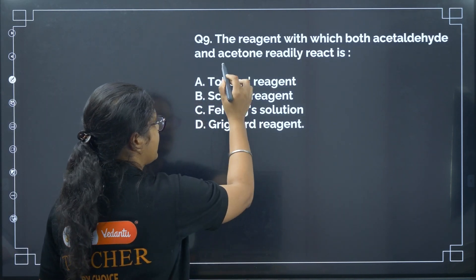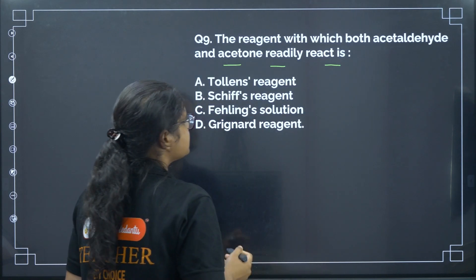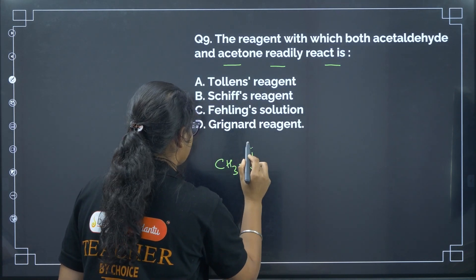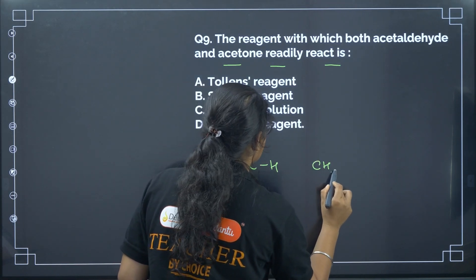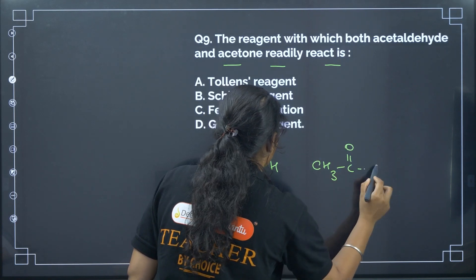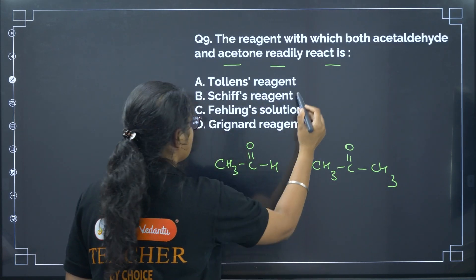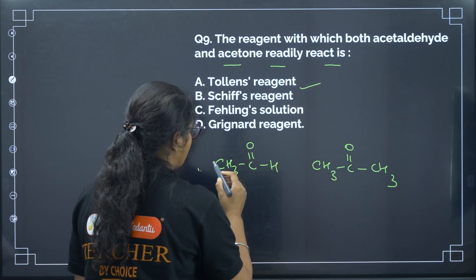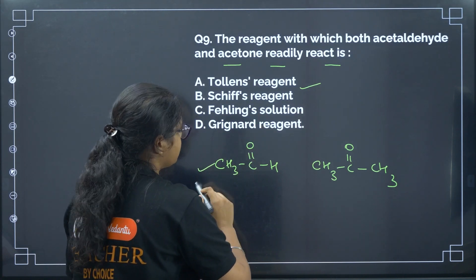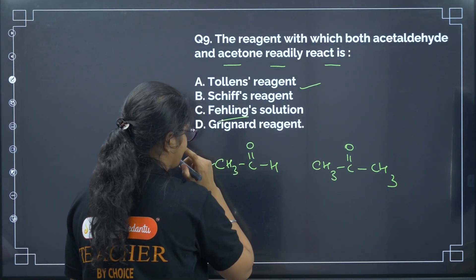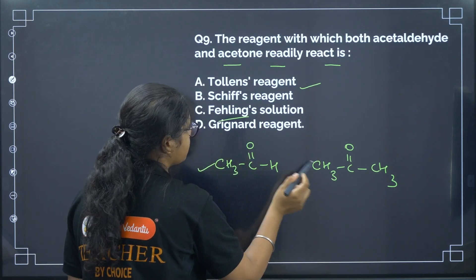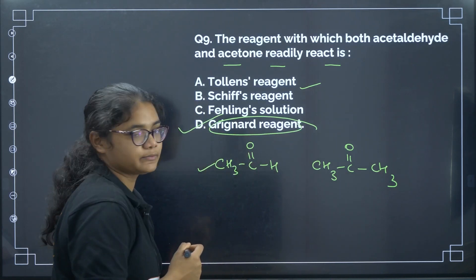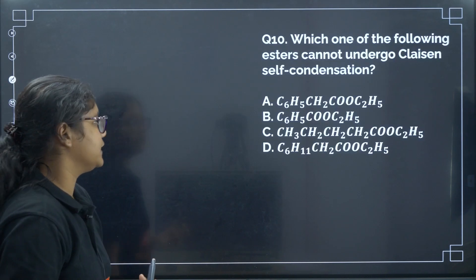Next: the reagent with which both acetaldehyde and acetone readily react is? Tollens' reagent reacts only with aldehydes. Schiff's reagent also reacts only with aldehydes. Fehling's solution also reacts with aldehydes but not ketones. However, Grignard reagent reacts with both aldehydes and ketones. Correct answer: option D.